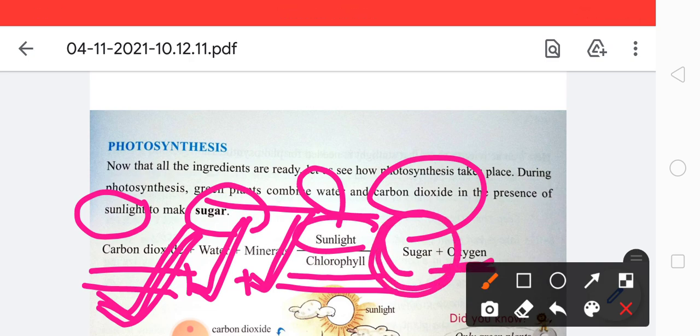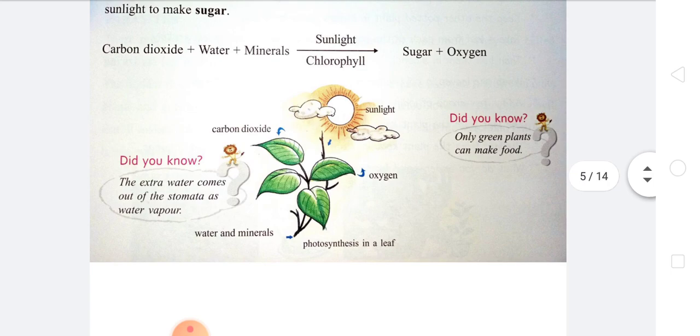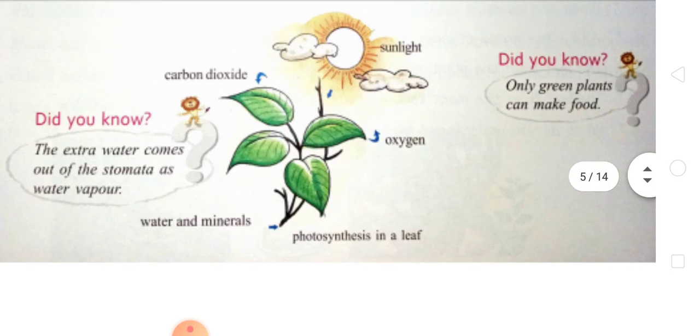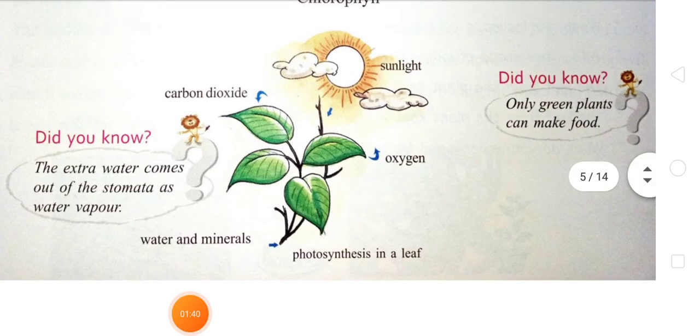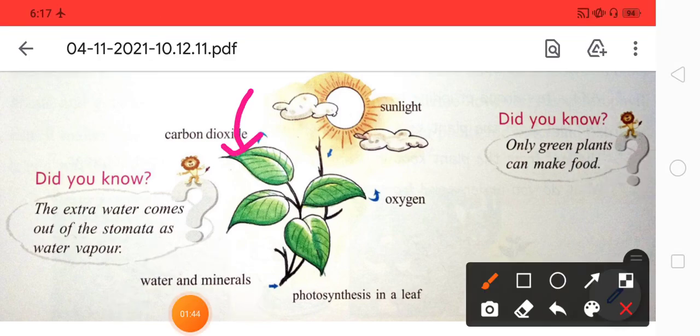The end product is sugar and also it gets rid of some oxygen. So this process is known as photosynthesis. You can see this plant is performing photosynthesis here. The carbon dioxide is taken from the air through the stomata and the sunlight is trapped by the chlorophyll.